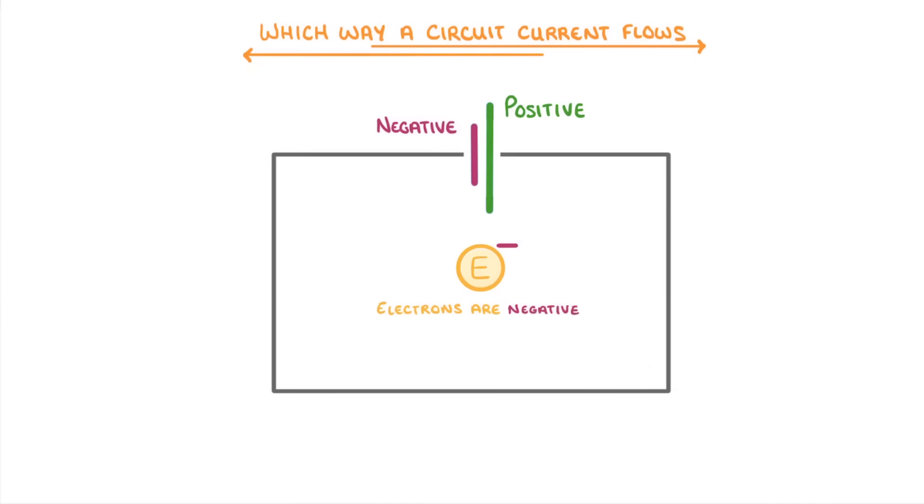Now, because electrons are negatively charged, they flow around the circuit from the negative terminal to the positive terminal. However, when people first discovered electricity, they didn't know anything about this. So they decided that current flows from positive to negative, and we now keep this convention, sometimes calling it conventional current.